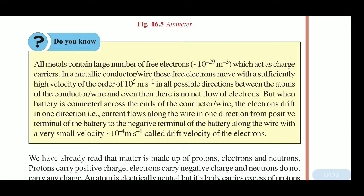But when a battery is connected across the ends of the conductor wire, the electrons drift in one particular direction. Current flows along the wire from the positive terminal of the battery to the negative terminal, with a very small velocity of 10 to the power minus 4 meter per second, called the drift velocity of the electron.